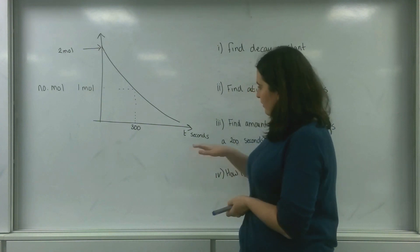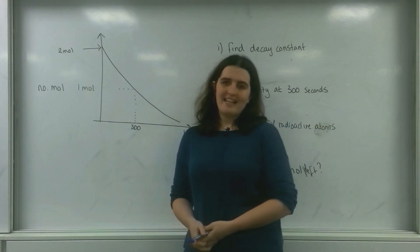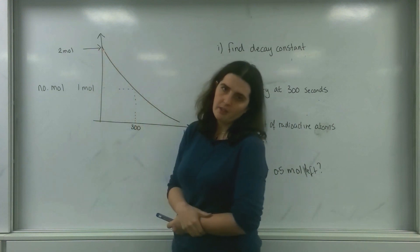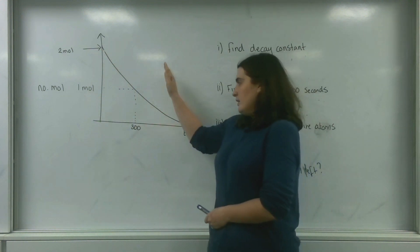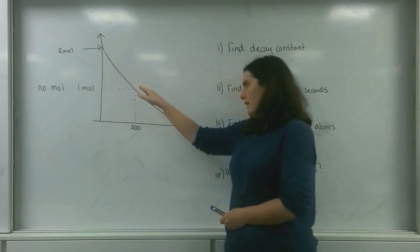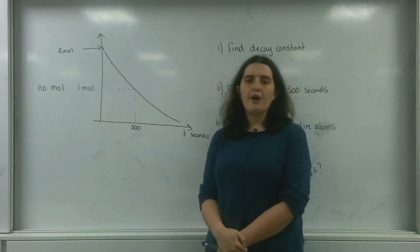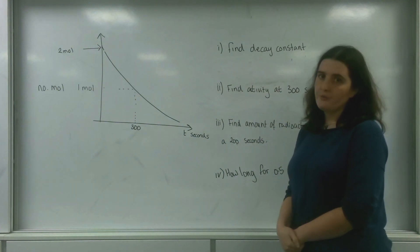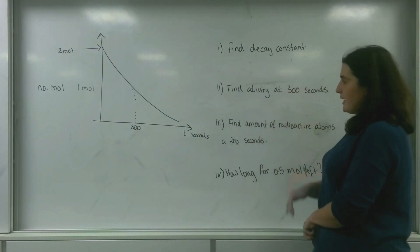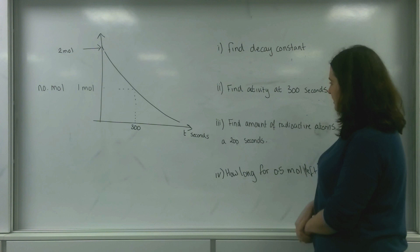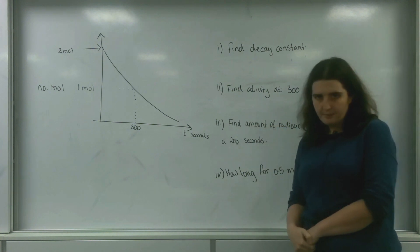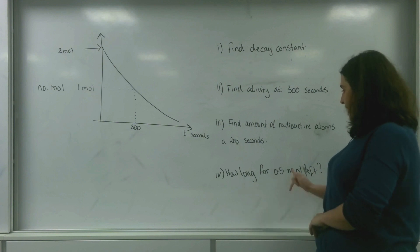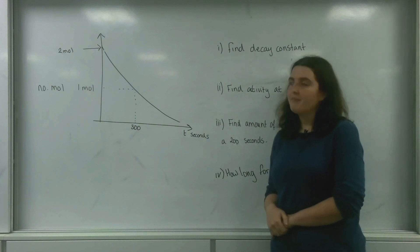What I've got here is a graph of a radioactive isotope that is decaying. At time zero I have two moles of the radioactive isotope, and after 300 seconds I have one mole — it exponentially decays over time. The questions I've been asked are: find the decay constant, find the activity at 300 seconds, find the number of radioactive atoms at 200 seconds, and how long it would take to have only 0.5 moles left.